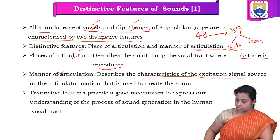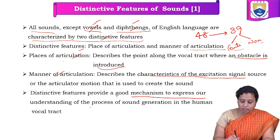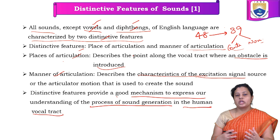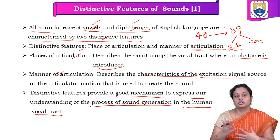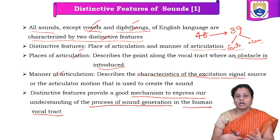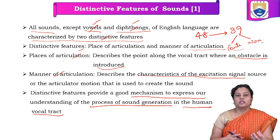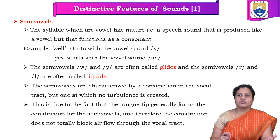The reason we use these distinctive features is that they provide a mechanism to express how the sound has been generated in the human vocal tract. When we understand how vowels, diphthongs, semi-vowels, and nasal sounds are created — what the excitation signal is and where the constriction is formed — this plays an important role when we try to replicate the vocal tract using digital signal processing filters and transform functions. We can differentiate these sounds using these two parameters.